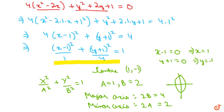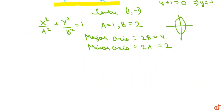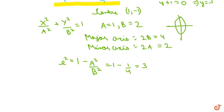Now we find the eccentricity. The formula for a vertical ellipse is e² = 1 - a²/b². So e² = 1 - 1/4 = 3/4. Therefore, eccentricity e = √3/2.